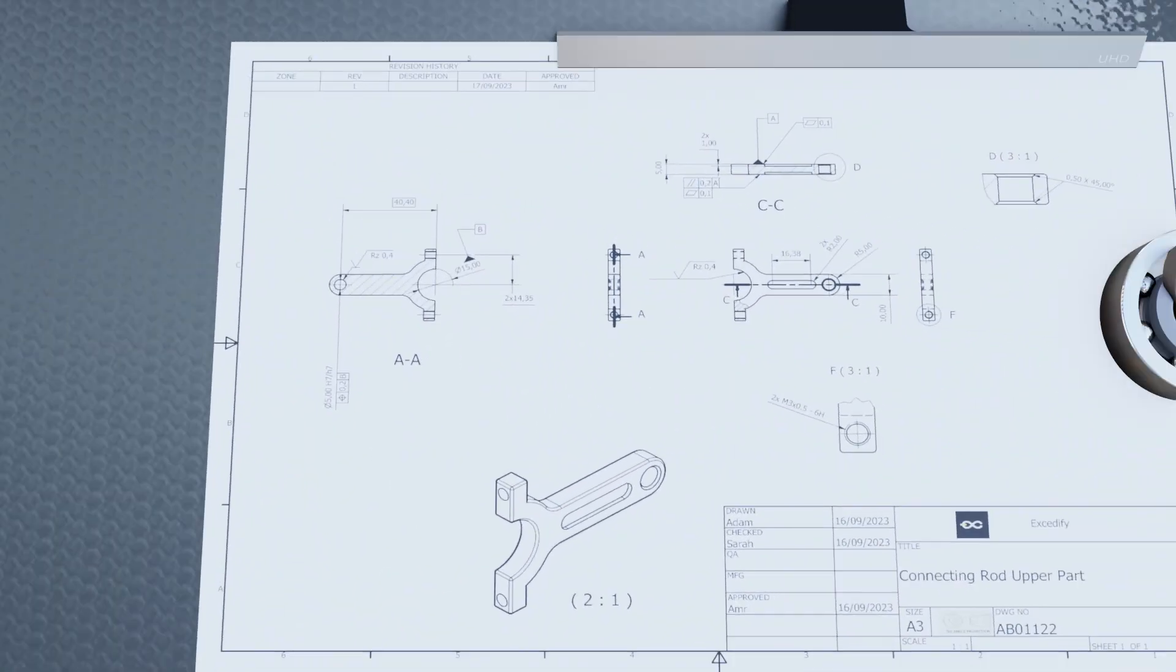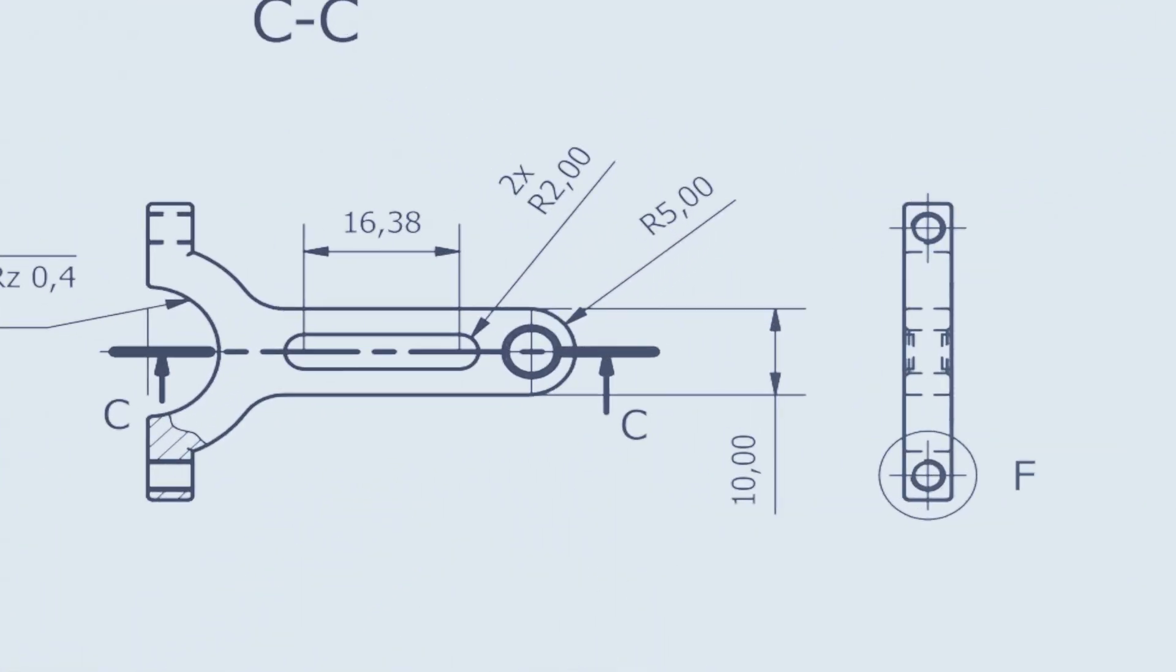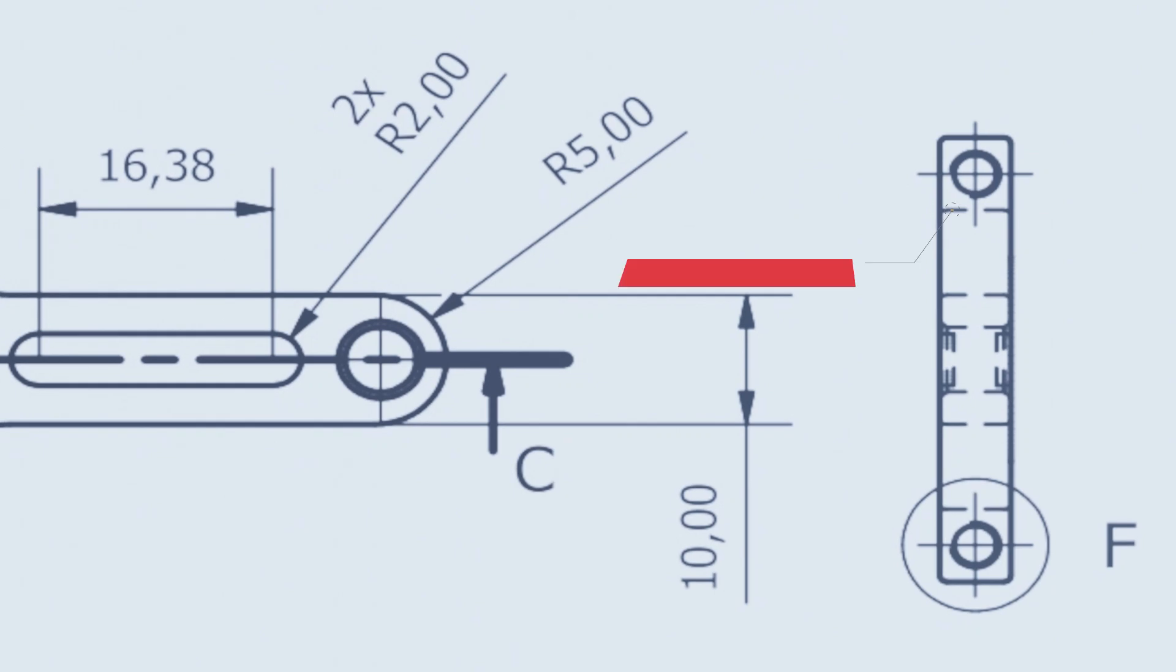But to give the drawing reader a better understanding of the part, only from looking at it from the side view on the drawing, this edge is represented as a dashed line to indicate that there is an edge hidden behind the visible faces of the part when observed from this view.